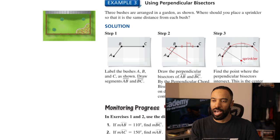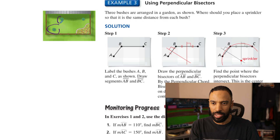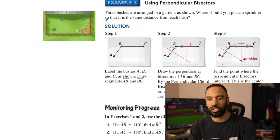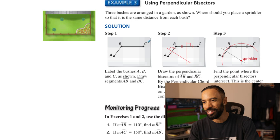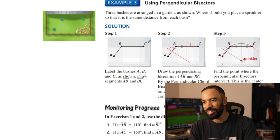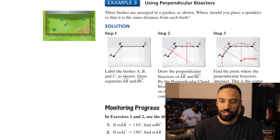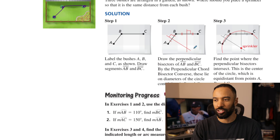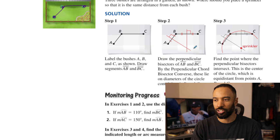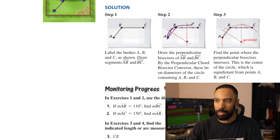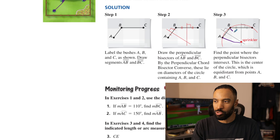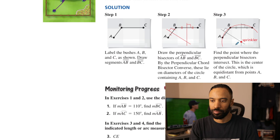Using perpendicular bisectors: three bushes are arranged in a garden. Where should you place a sprinkler so it's the same distance from each bush? To be equidistant, you need congruent radii, so you need to find a center — the circumcenter. Label the bushes A, B, and C. Draw segments AB and BC, then make perpendicular bisectors. Wherever they intersect is the circumcenter, so you can have a circle that circumscribes all three. A to the sprinkler, B to the sprinkler, and C to the sprinkler are all congruent radii.